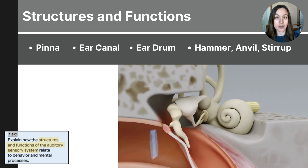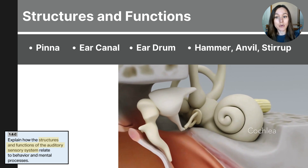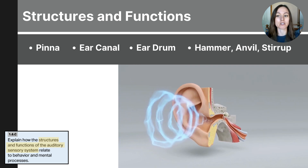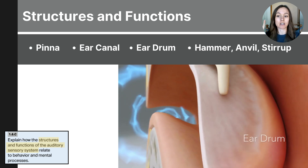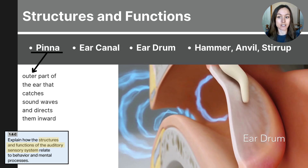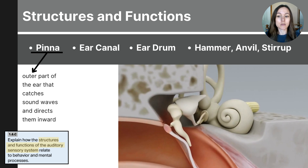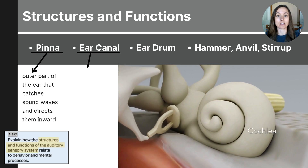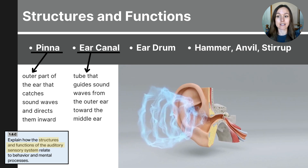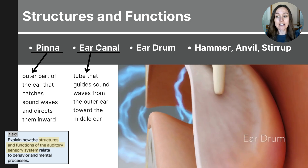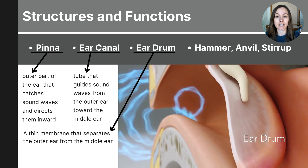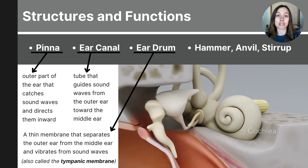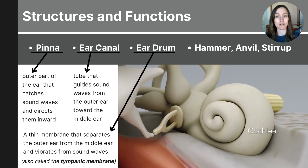The process of hearing begins with sound waves, which are vibrations that travel through the ear from a sound-making source, like someone talking or music playing. The outer part of the ear, which is shaped like a funnel, is called the pinna, and this is what catches the sound waves and guides them into the ear canal. The ear canal is the tube that concentrates and guides the sound waves further into the ear. At the end of the ear canal is the eardrum, which is a thin flexible membrane that seals the outer ear from the middle ear. The eardrum is also called the tympanic membrane, and it vibrates as sound waves strike it.